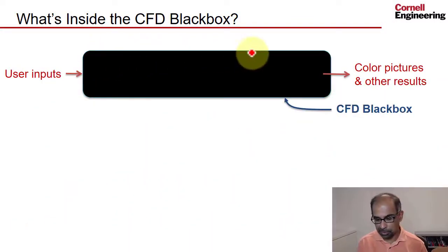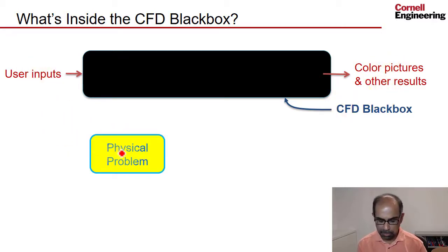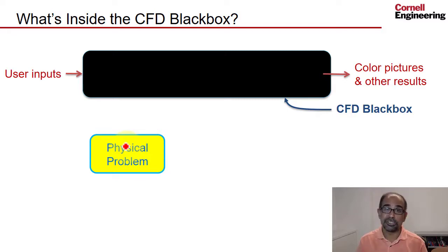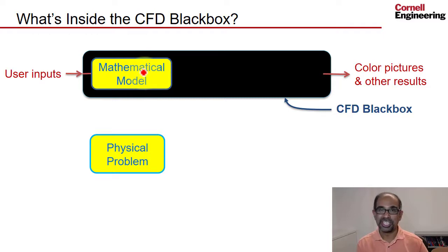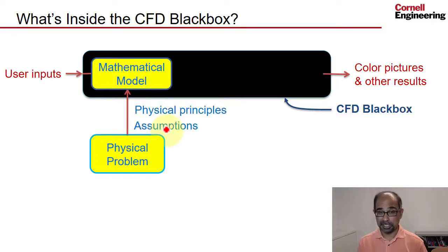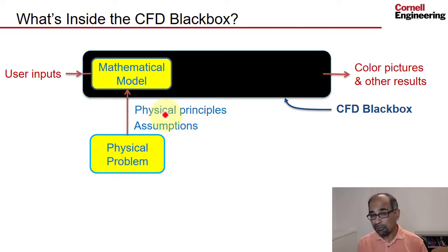We have our black box — we give it user inputs and we get color pictures of results. We pick the user inputs — geometry, mesh, boundary conditions, material properties — based on the physical problem. But the most important thing to keep in mind is that the black box is not solving the physical problem; it's solving a mathematical model of the physical problem, based on differential equations and boundary conditions. That mathematical model is built from the physical problem using physical principles and assumptions. So the key questions are: what are the governing equations and boundary conditions, and what are the physical principles and assumptions built into that mathematical model?